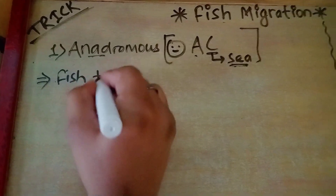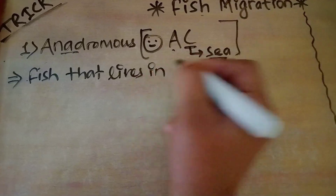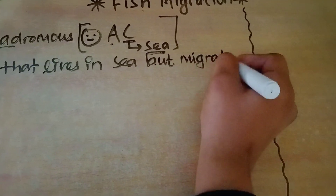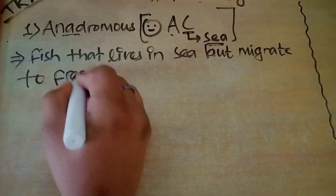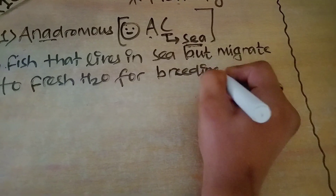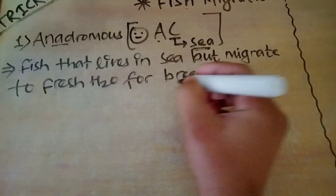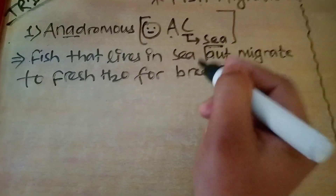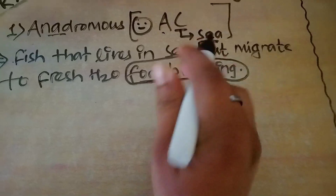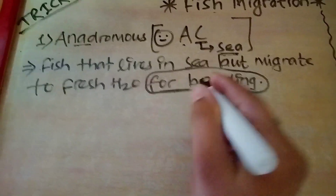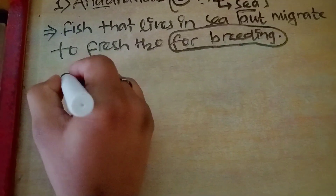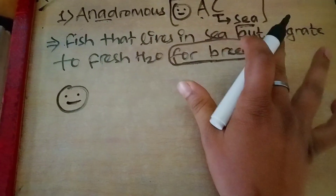The definition is: a fish that lives in marine water or sea but migrates to fresh water for breeding. Be careful while reading the definition — always check if 'breeding' is given or not. If breeding is not mentioned, it could be amphidromous, which I will teach later. So if breeding is given, it is anadromous; if not, it could be amphidromous. Read carefully.